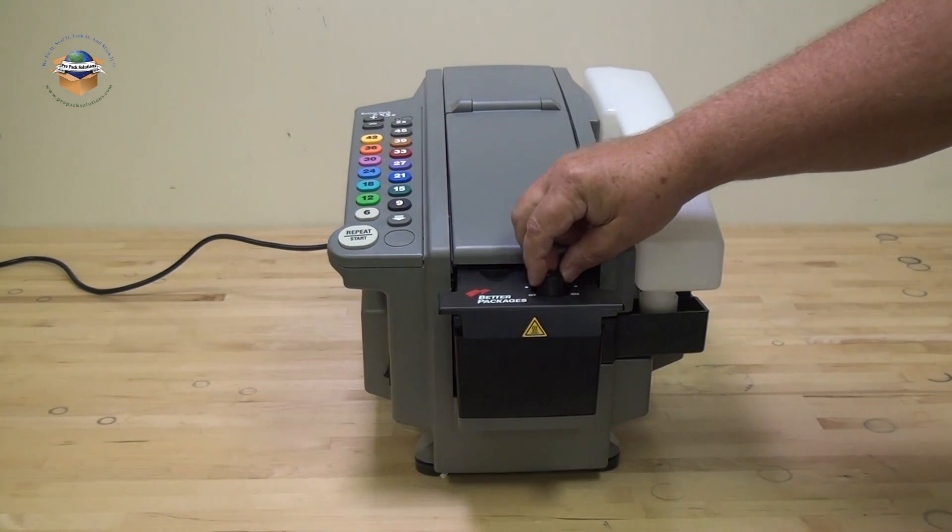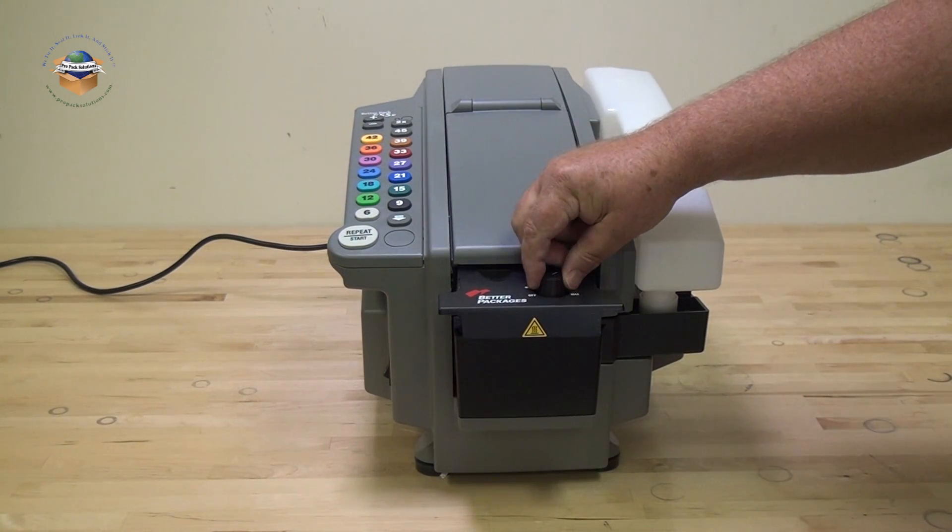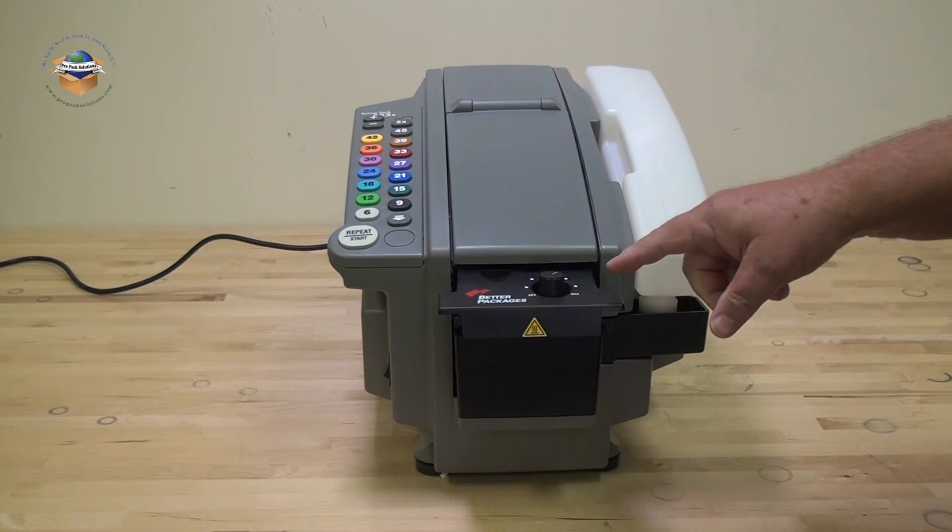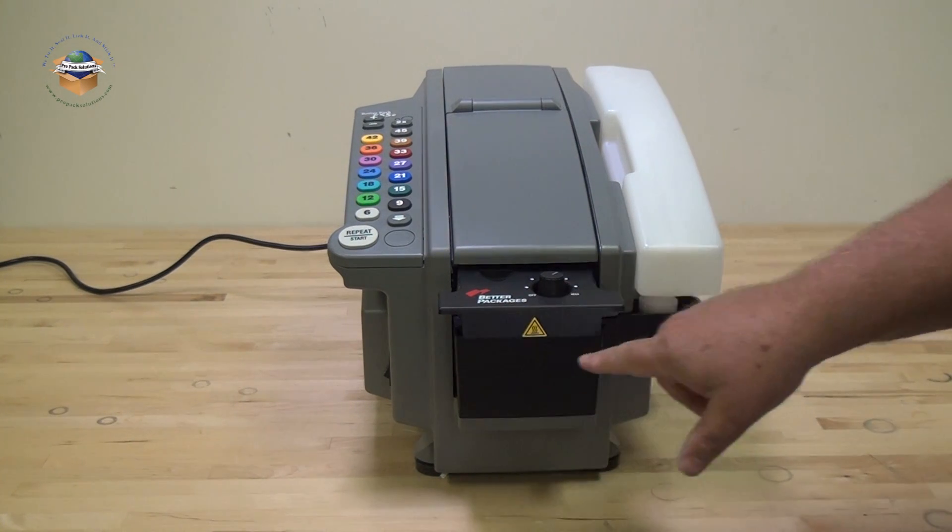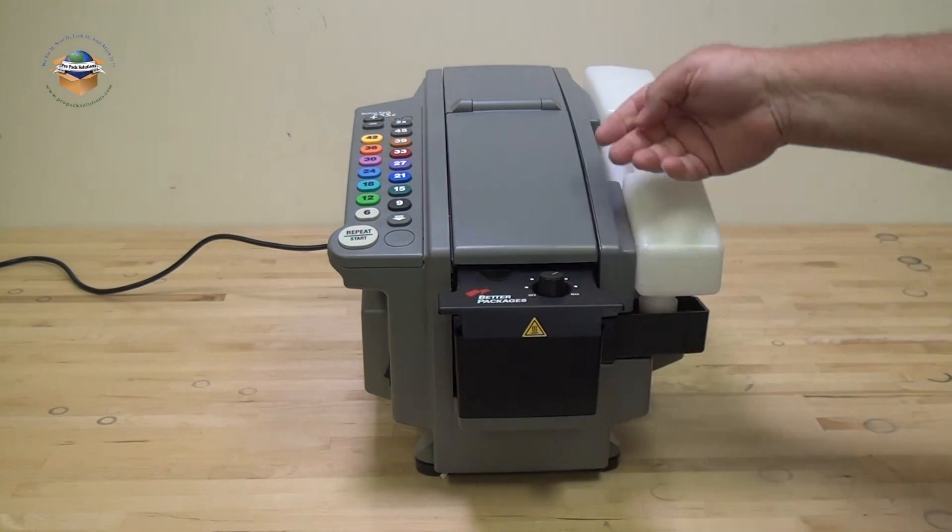When you first get your machine, you'll need to set the temperature on the heater. I would turn it about two-thirds of the way open. The Better Pack top heaters will create a zone of heat at the tip of the brushes. As tape passes, the hardened, dried glues will be reactivated.